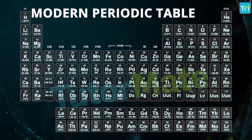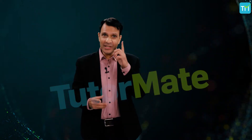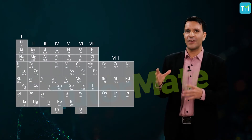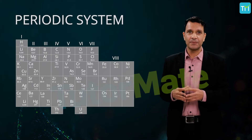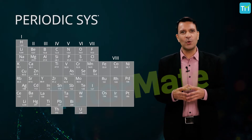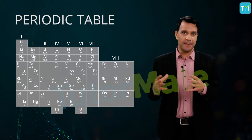Looking at the present form of the periodic table, you will notice that lithium, sodium, and potassium belong to the same family — reiterating the fact that these three elements possess similar chemical properties. Mendeleev called his table of elements the periodic system, which is now commonly known as the periodic table.